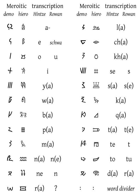Meroitic scripts, both hieroglyphic and cursive, were added to the Unicode standard in January 2012 with the release of version 6.1. The Unicode block for Meroitic hieroglyphs is U+10980–U+1099F. The Unicode block for Meroitic cursive is U+109A0–U+109FF. As a Meroitic Unicode font, you may use Egyptus, which can be downloaded from Unicode fonts for ancient scripts.